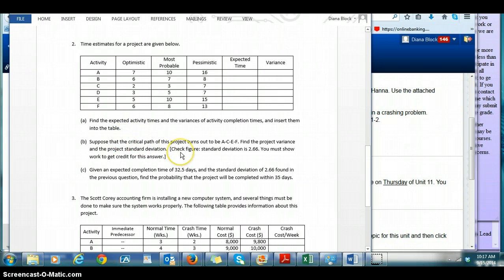And so in part B, it tells you what the critical path is for this project. So now that you have this critical path information, it asks you to find the project variance and the project standard deviation. So you're going to use those items on the critical path to determine the variance and standard deviation for the project.